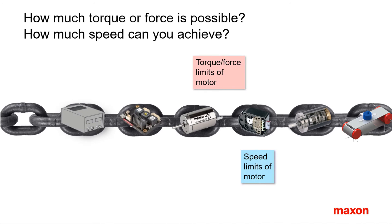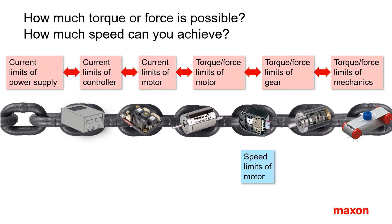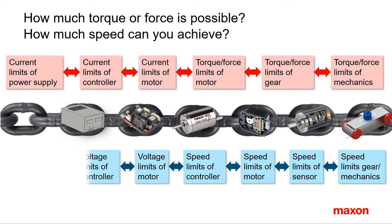The weakest link in the drive chain limits the power available at the load. Hence, it's not only the torque and speed limits of the motor — the limited torque capabilities of the gearhead or the mechanical system must be considered as well, or the current limit of the motor, controller or power supply. Similarly, the achievable speed can be limited by other components such as sensors, gears and mechanics, or the controller.